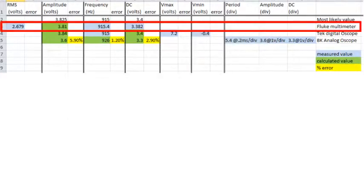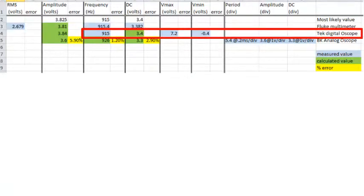The direct measurements for the Fluke multimeter include the RMS voltage, the frequency, and the DC offset. The direct measurements for the digital oscilloscope include the frequency, voltage maximum, and voltage minimum.